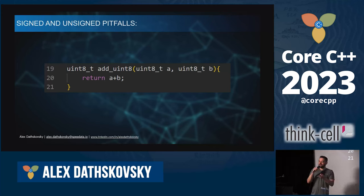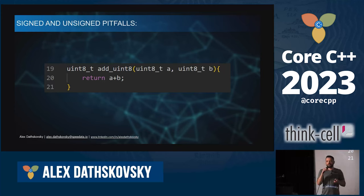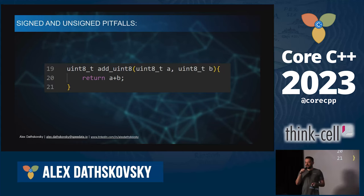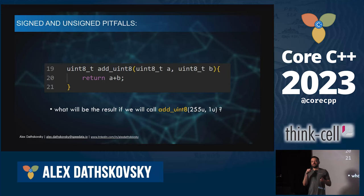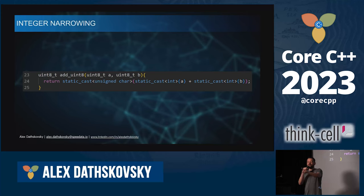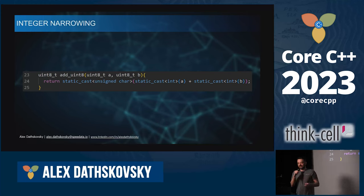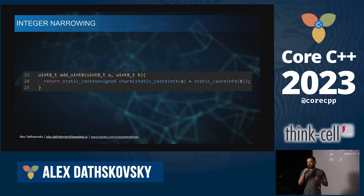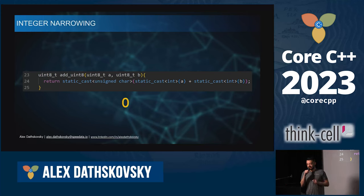In a similar function, if we use uint8 as the return type instead of auto, the compiler still promotes both operands to int internally, performs the addition getting 256, and then narrows the result back to uint8 — giving zero, which is what you'd expect from overflow. The compiler sees: promote to int, add, then narrow. Be careful with auto — you need to understand exactly what type it will deduce.